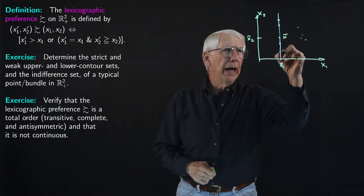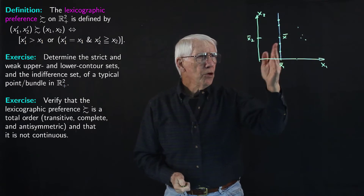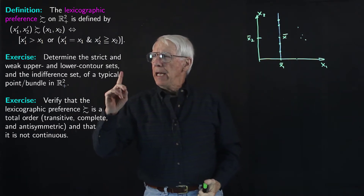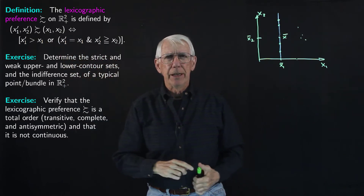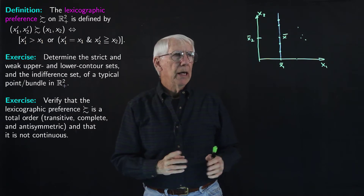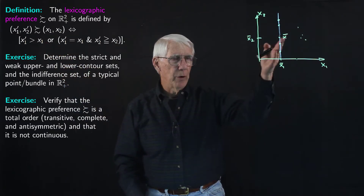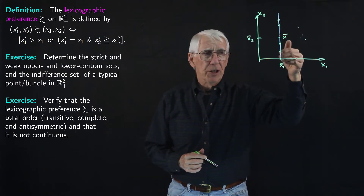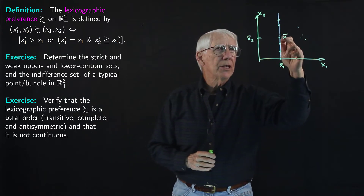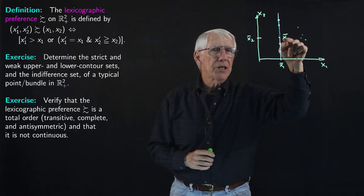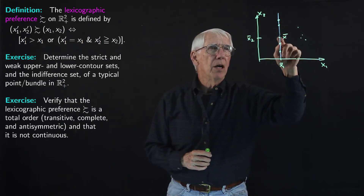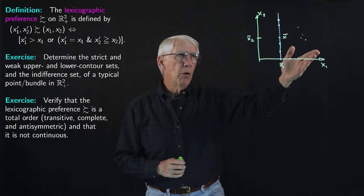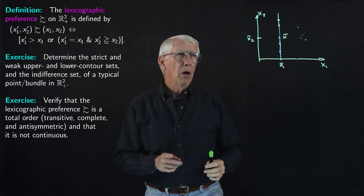What about the points on the blue line? All those points have the same first component as X-bar — X1 equals X1-bar. So it's the second part of the definition that applies: those points whose second component is at least as big as the second component of X-bar are at least as good as X-bar. That's all the points on the blue line above X-bar, and X-bar itself. So all of those points to the right and on the blue line above — those are all at least as good as X-bar.